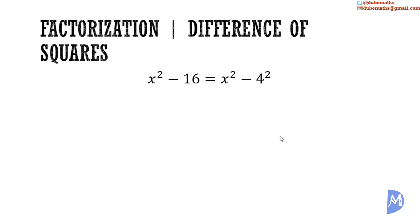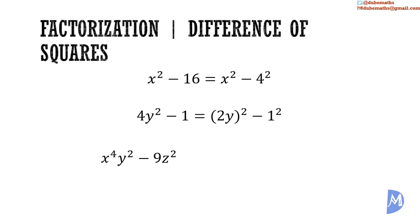Thus, examples of difference of square terms are: x squared minus 16, which is x squared minus 4 squared; 4y squared minus 1, which is 2y squared minus 1 squared; and x to the 4th power y squared minus 9z squared, which is x squared y squared minus 3z squared, etc.